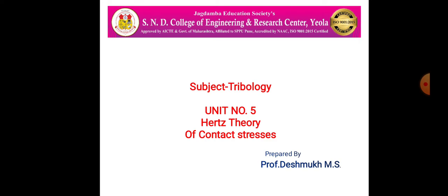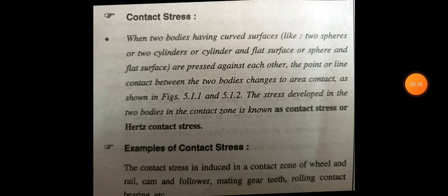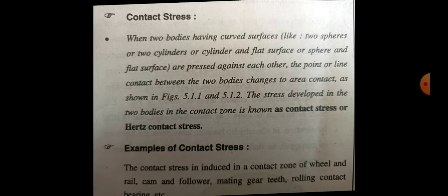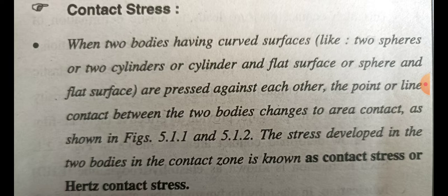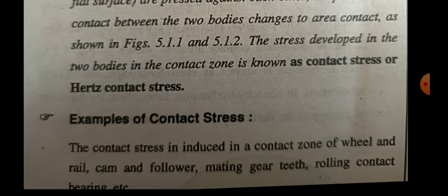What is contact pressure? When two bodies having curved surfaces — two spheres, two cylinders, flat surfaces, or a sphere and flat surface — are pressed against each other, the point or line of contact changes to an area of contact as shown in the figure. The stress developed in the contact zone is called contact stress.